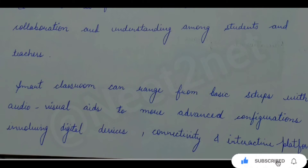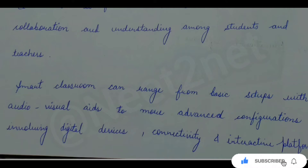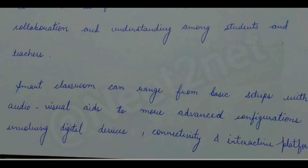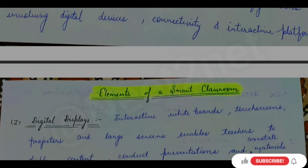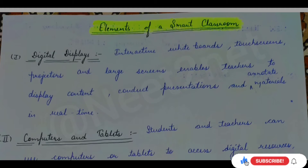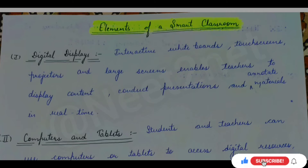The smart classroom has a lot of setup requirements. You will need audio and visual aids, a proper mic system, speakers, digital devices which you connect through laptops, PCs, mobile phones, tablets, connectivity, network internet connection, and interactive platforms. So you will need to set up these things when you have a smart classroom setup. Now let's talk about the elements of a smart classroom.